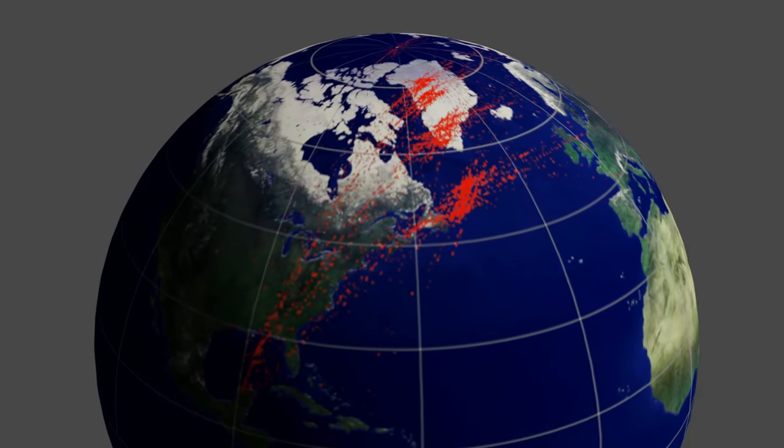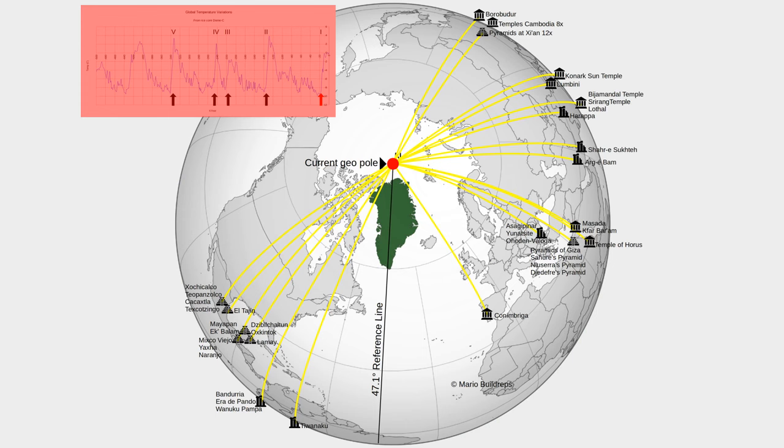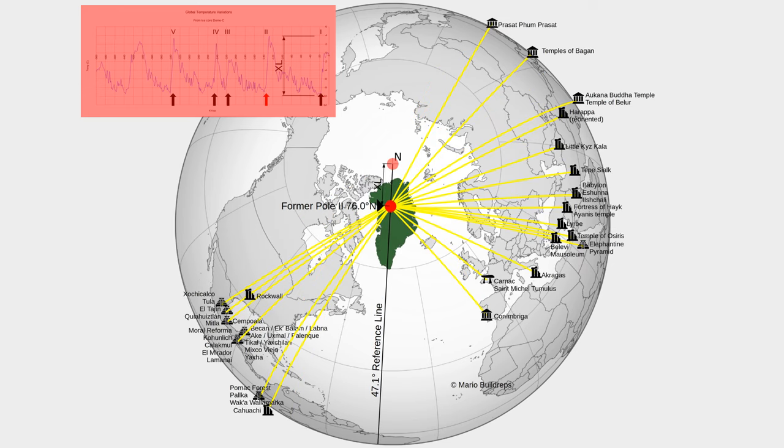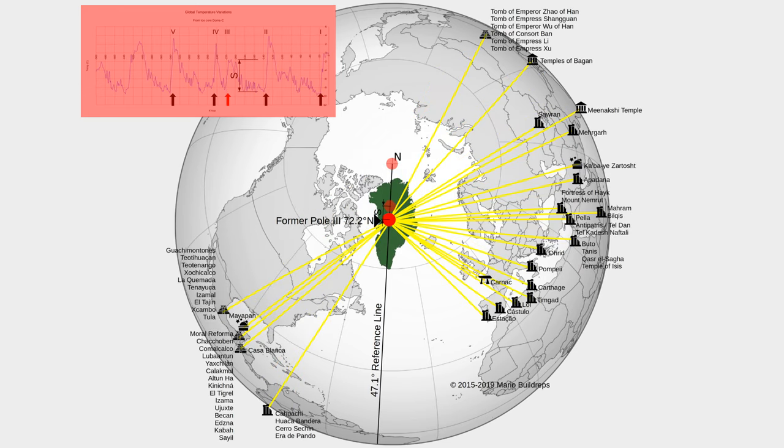Of course, not all ancient sites are oriented to each of these clusters. Around 60% of the whole collection of ancient sites are focused on five very small areas.